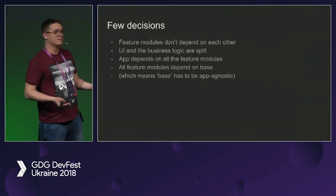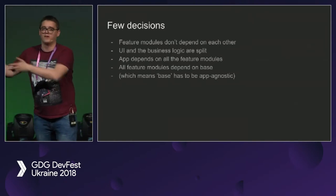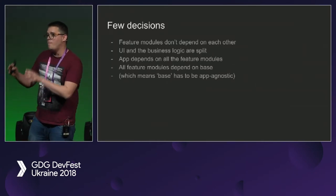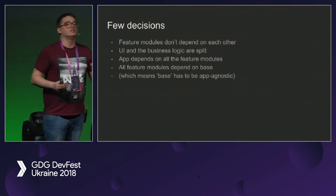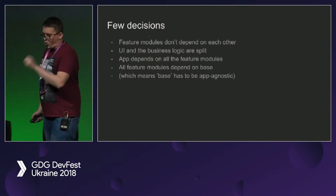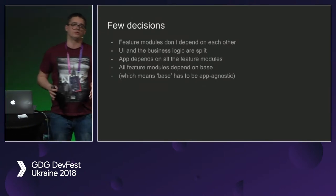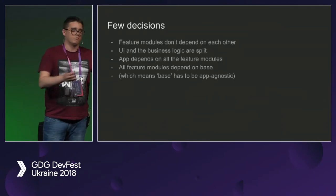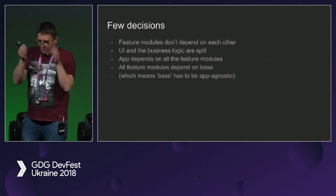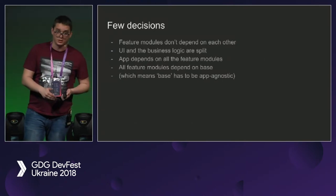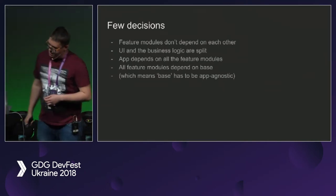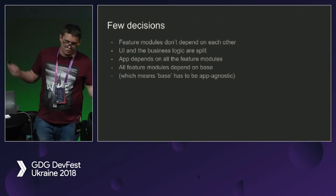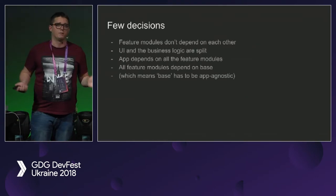In the past we had lots of issues where you'd go to the dealing code wanting to refactor it, and after two days of constant refactoring you'd realize you were already refactoring payments because everything was so coupled. We wanted compile-time validation that we weren't introducing coupling between modules. The UI and business logic are split within modules — we follow Model-View-Presenter. The app module depends on all feature modules, and all feature modules depend on base, which means base has to be business-agnostic.